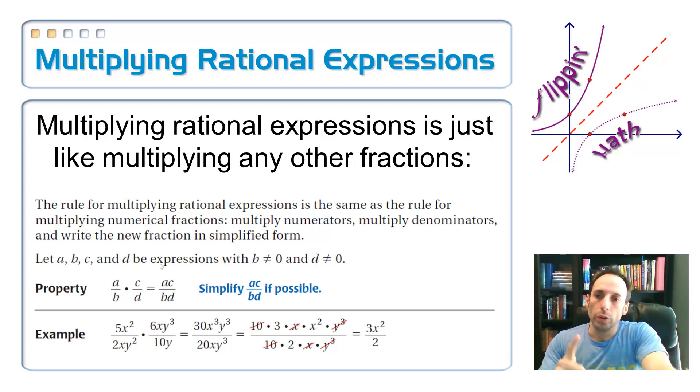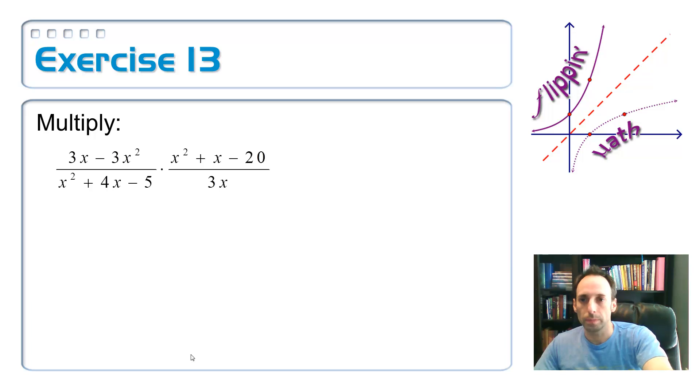When you're multiplying, top times top, bottom times bottom, just as you see here, and you simplify if you can. With this example, I would not have done it exactly like they would have done it. I would have canceled out the 2 with the 6. I would have canceled out some of the x's before I even went through. It would have made the multiplication that much easier.